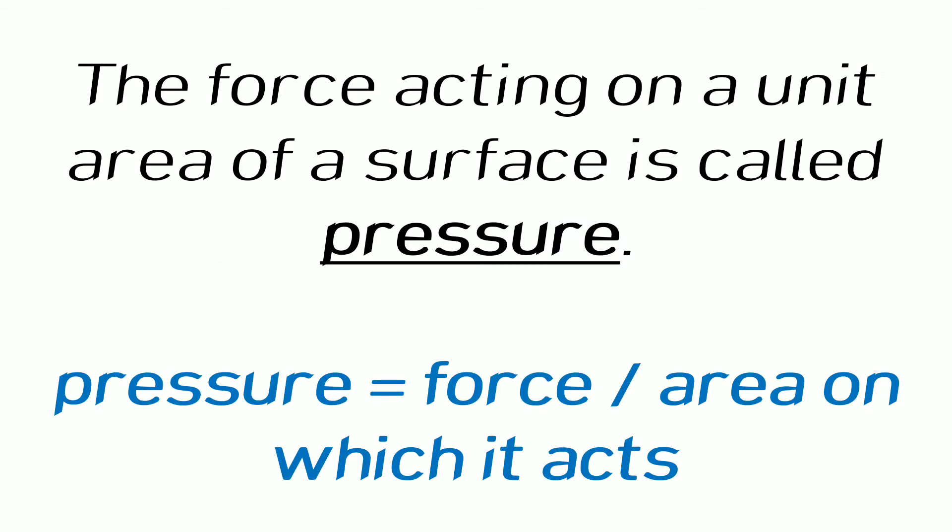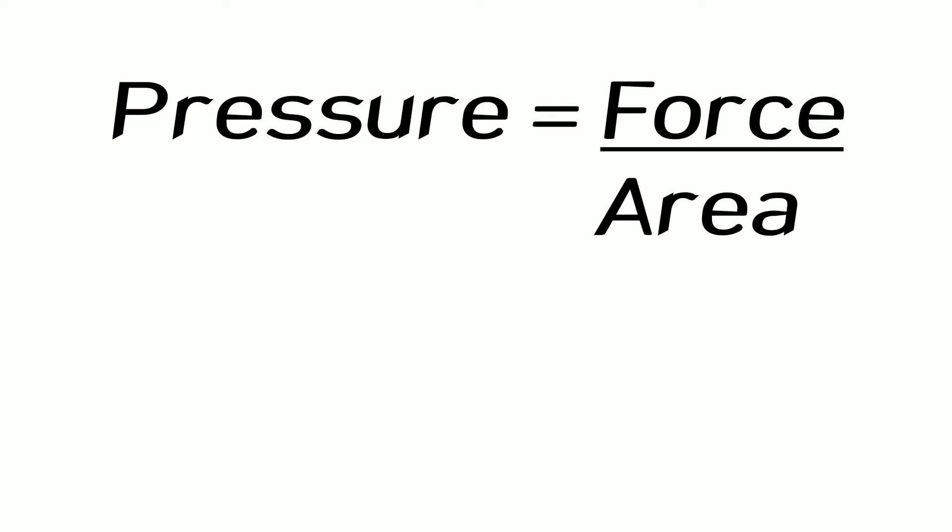This force that is acting on the unit area of a surface is called pressure. Pressure can be written as force upon area on which it is acting, that is pressure equals force by area. Symbolically it can be written as P = F/A, where P represents pressure, F represents force, and A represents area.